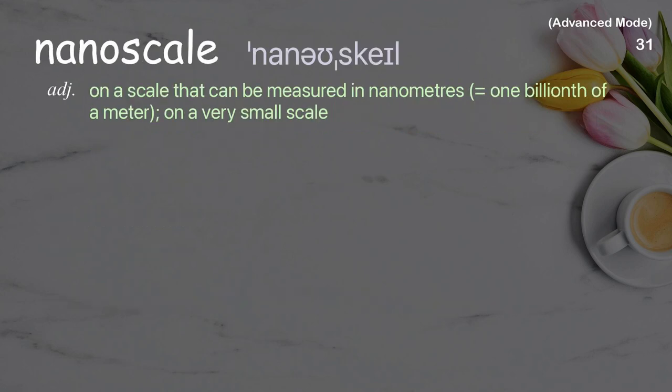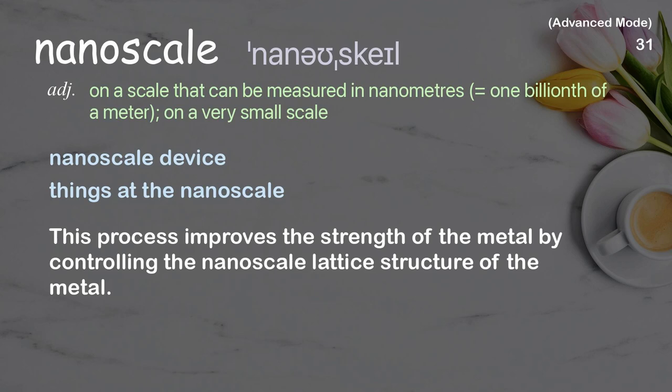Nanoscale: on a scale that can be measured in nanometers (one billionth of a meter); on a very small scale. Examples: nanoscale device, things at the nanoscale. This process improves the strength of the metal by controlling the nanoscale lattice structure of the metal.